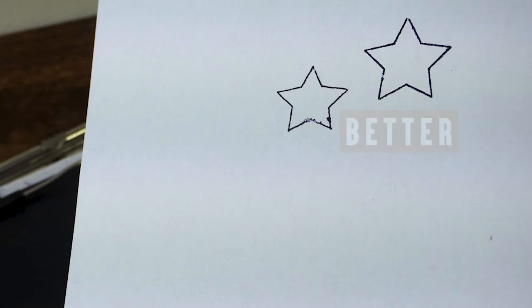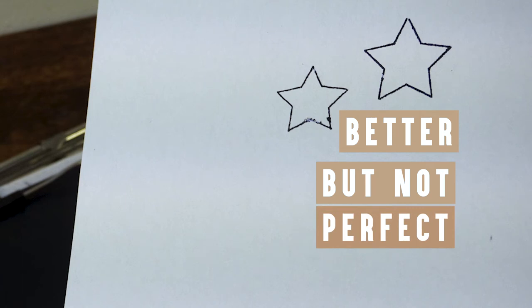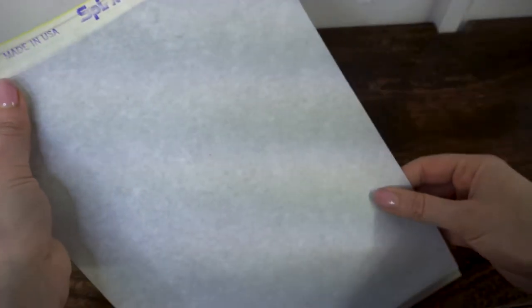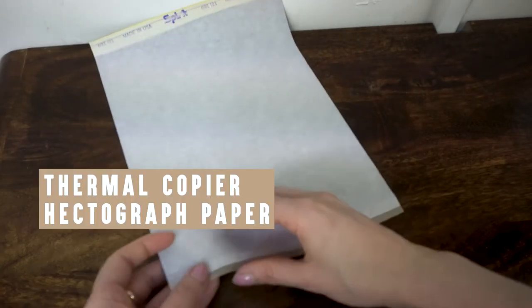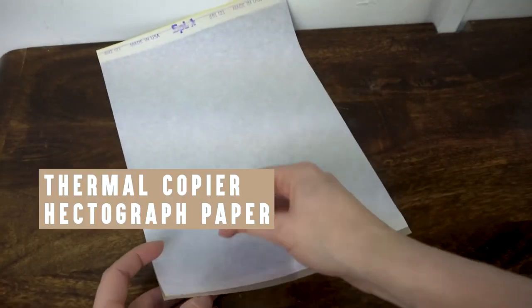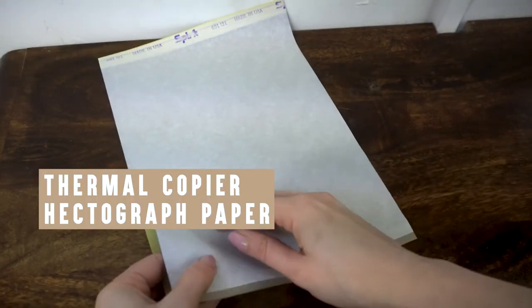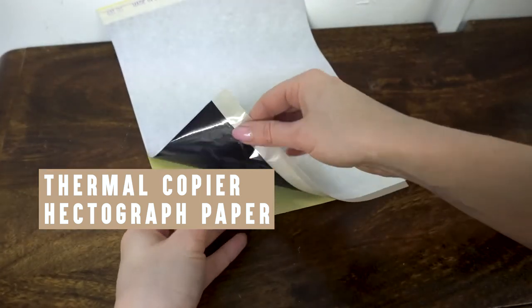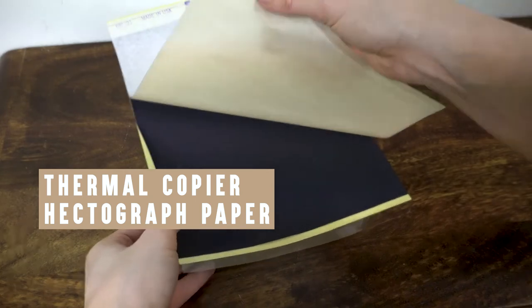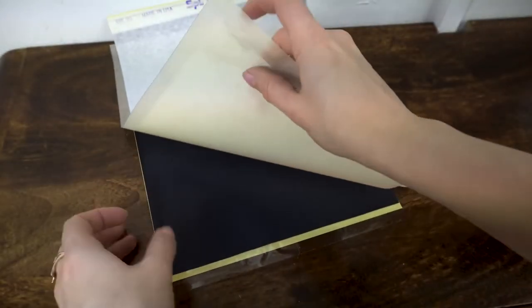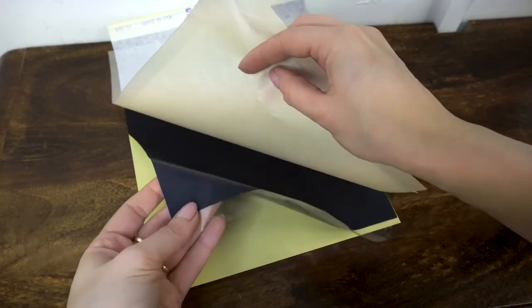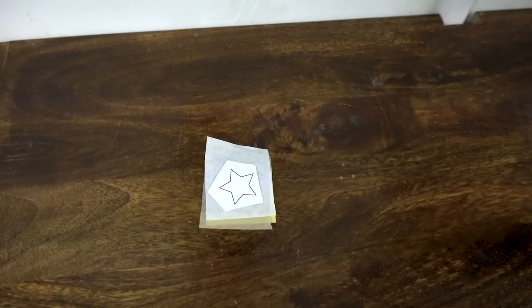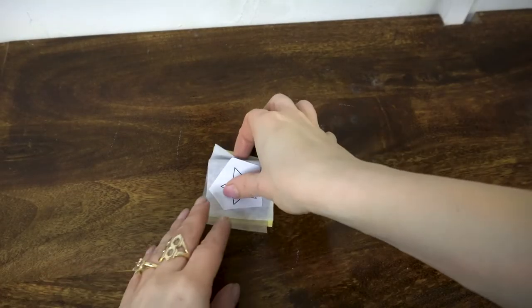Thermal copier hectograph paper. This is how it looks if you haven't seen it before. It has one, two, three, four sheets or layers. The brown one, some artists use it, I don't, I chuck it away straight away, and it's only three layers of paper you're left with.